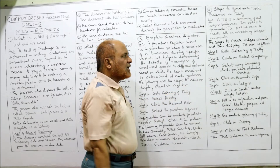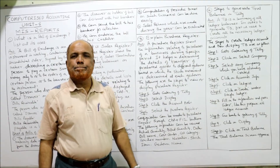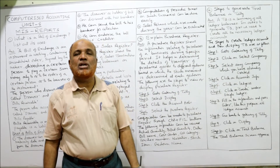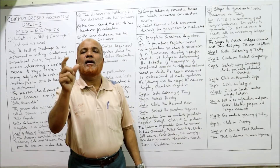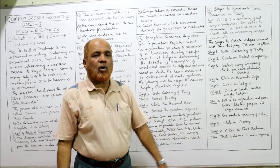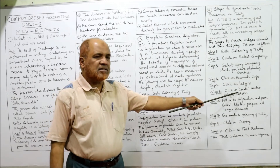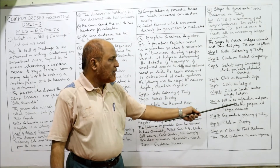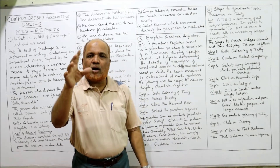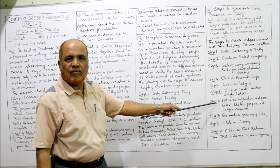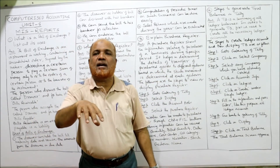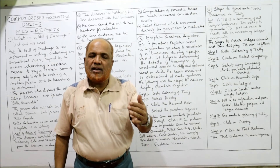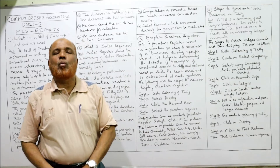Steps to create a ledger account: Step 1 — go to Gateway of Tally. Step 2 — click on Select Company and select a company. Step 3 — click on Accounts Info. Step 4 — under Accounts Info, click on Ledgers. Step 5 — click Create under Single Ledgers. Step 6 — fill in the necessary information and press Enter. Repeat this process to create all required ledger accounts.